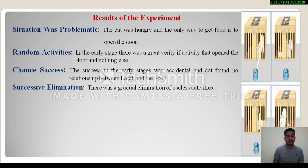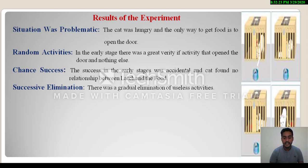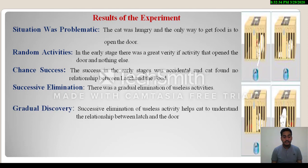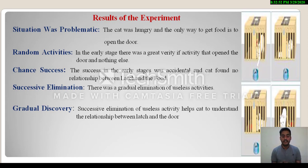Fourth point is successive elimination — there was a gradual elimination of useless activities. As Thorndike repeated the experiment and increased the trials, the cat's meaningless and useless activities kept reducing. The fifth point is gradual discovery: successive elimination of useless activity helped the cat to understand the relationship between the latch and the door.